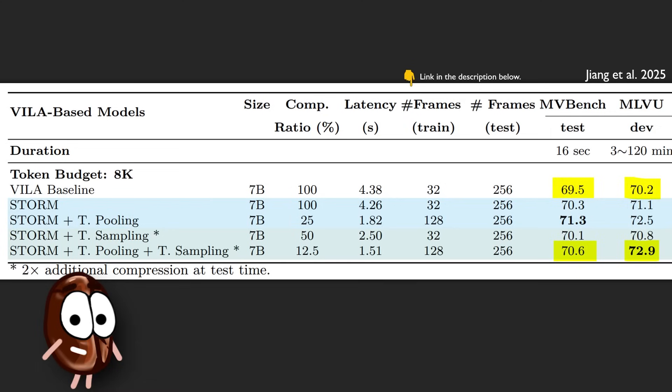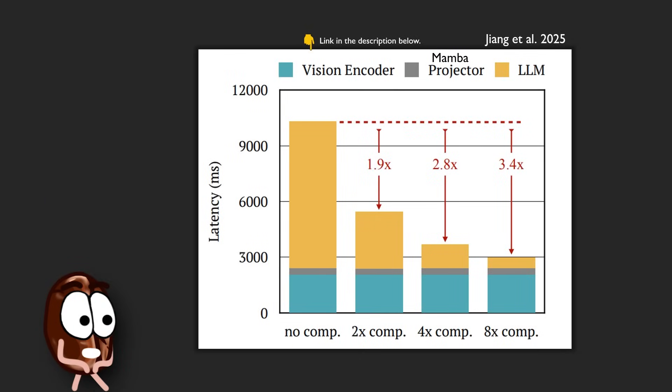While using eight times less compute for the LLM—because less compute is needed to run the LLM component—it also means that the user needs to wait 3.4 times less during inference time for the model response. The inference speedup was not as drastic as the compute for the LLM because the ViT and the Mamba layer still need time to process the data.